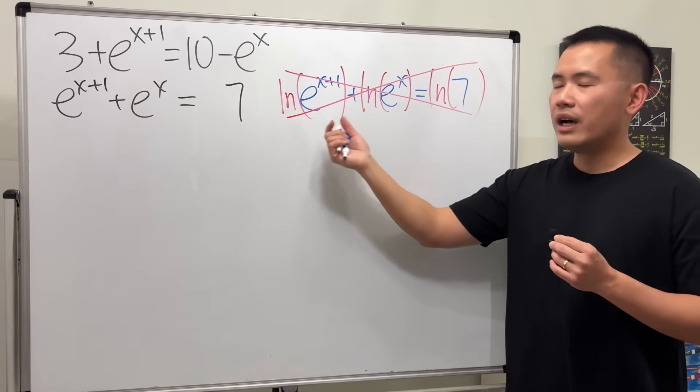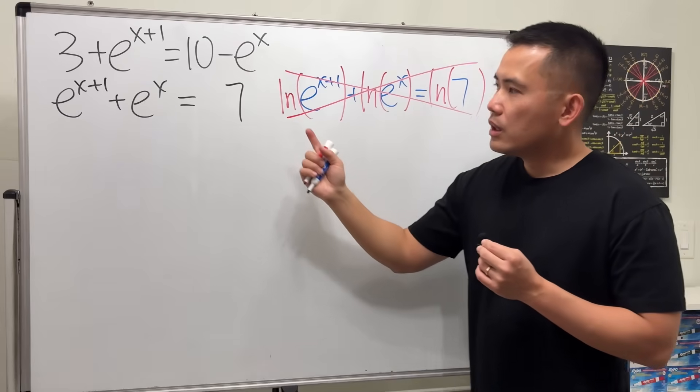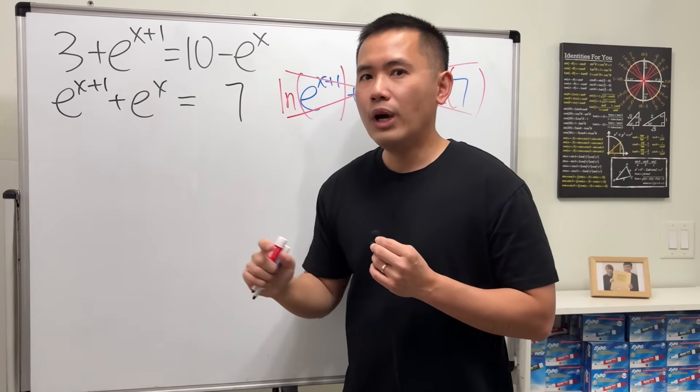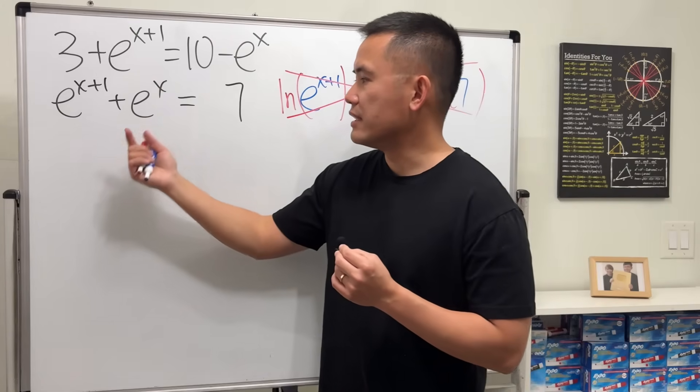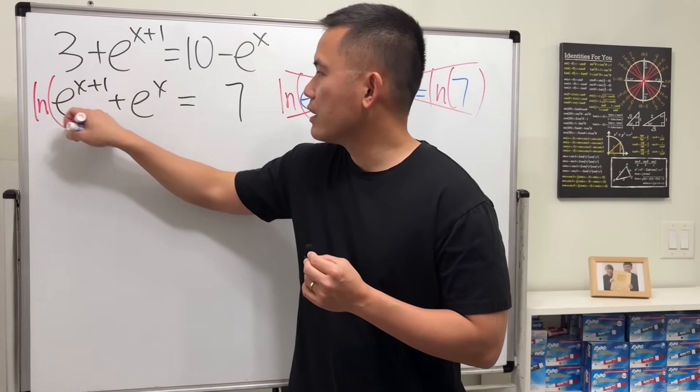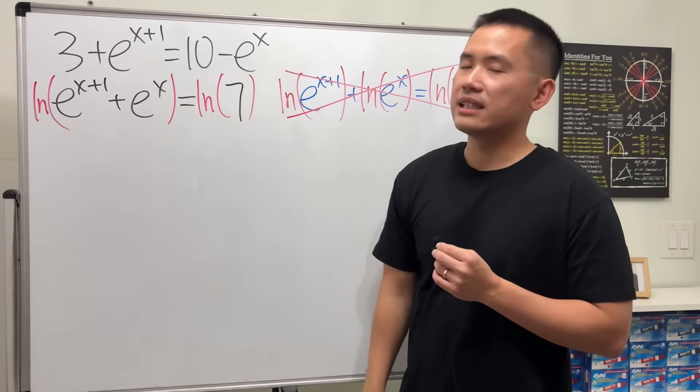We cannot just take the ln individually. If you want to take the ln right here, you have to make sure you do it to the entire left-hand side. Put it right here, the whole thing, and then like that.